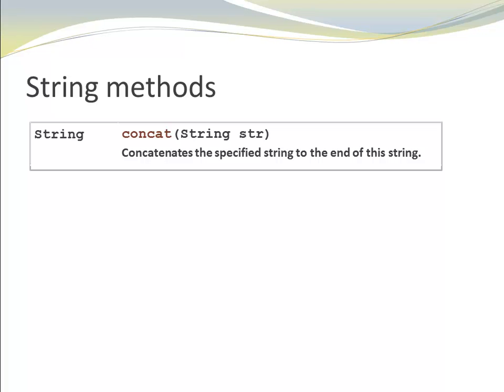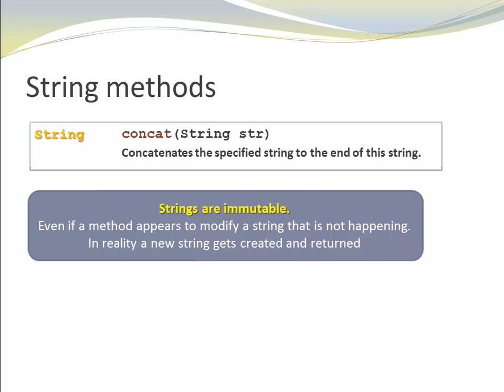Let's have a look at yet another method, concat. Concat concatenates the specified string to the end of this string. Notice the return type is string. Strings are immutable. Even if a method appears to modify a string that is not happening, in reality a new string gets created and returned.